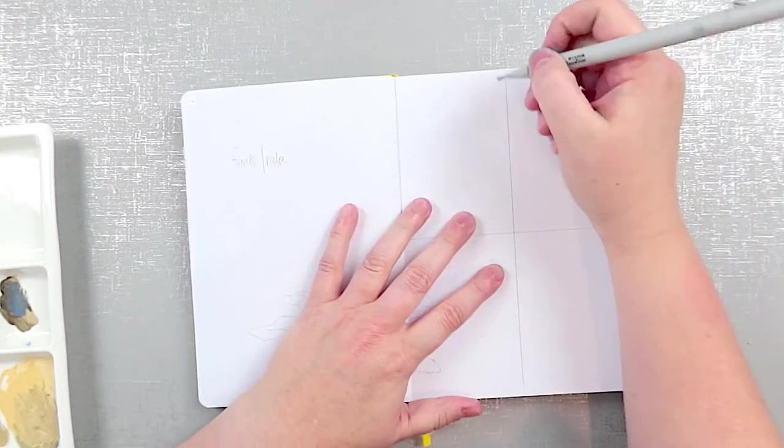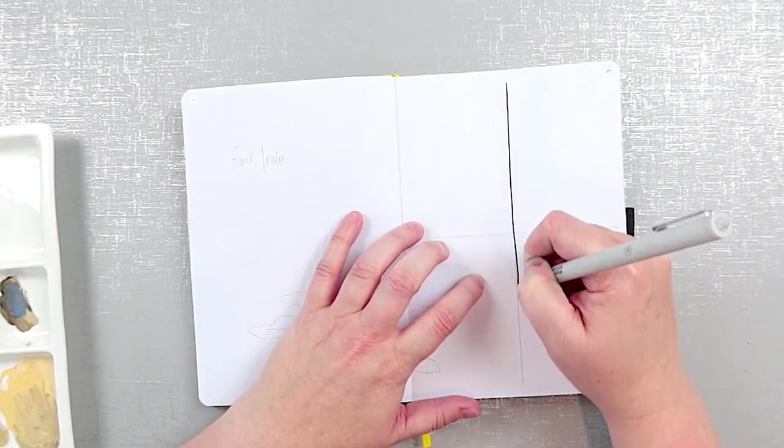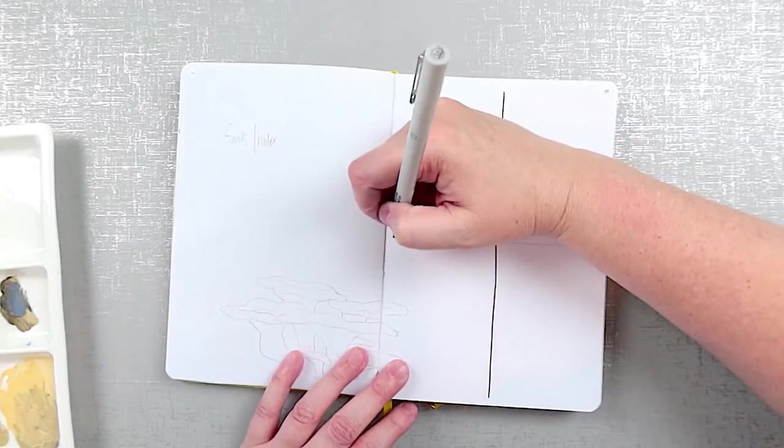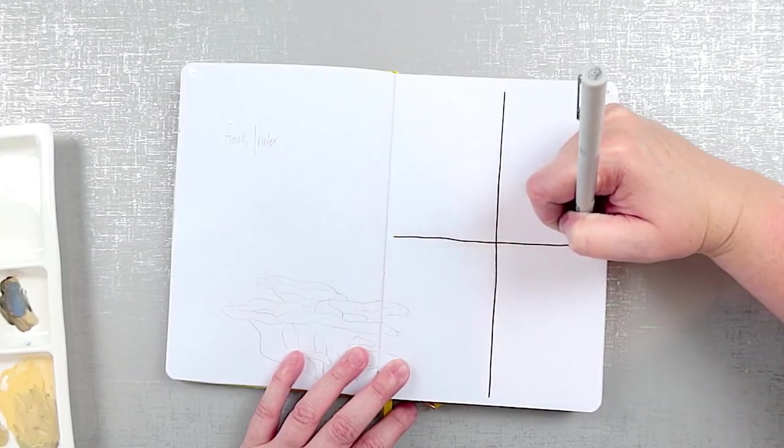Each weekly layout is going to have a simple grid design. Draw a line halfway down the page and halfway across the page. On a spread, it ends up as a grid of eight squares. Super simple.